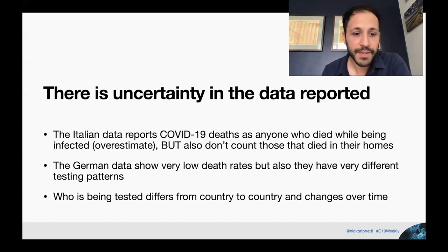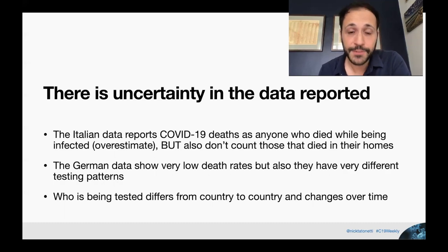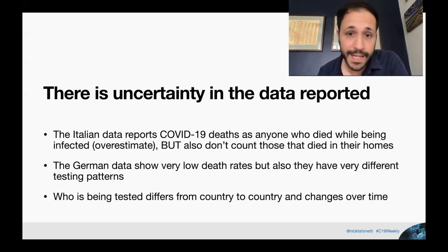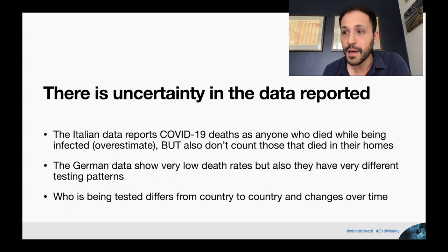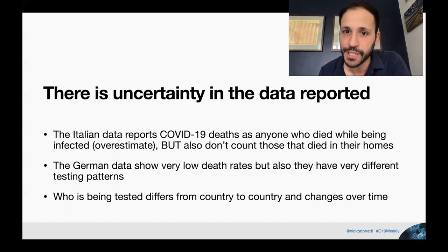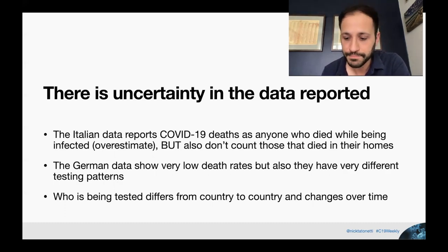The German data, for example, has much more comprehensive testing, so their denominator is much bigger and their death rate as a result is much lower. These types of inconsistencies in reporting that aren't accounted for in modeling will produce really big differences in the results.